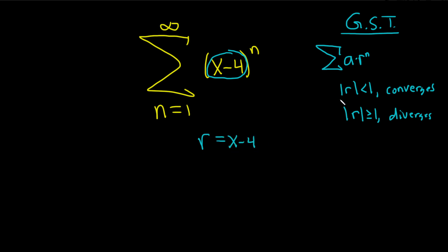And we want the series to converge, so we want the absolute value of r to be less than 1. But r is x minus 4, so we want the absolute value of x minus 4 to be less than 1.